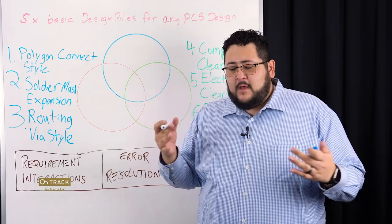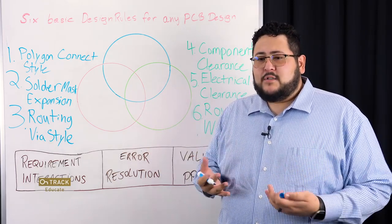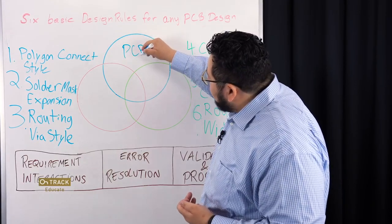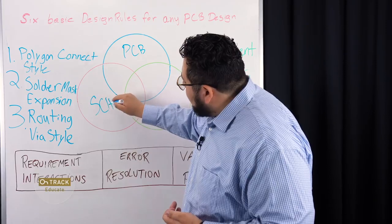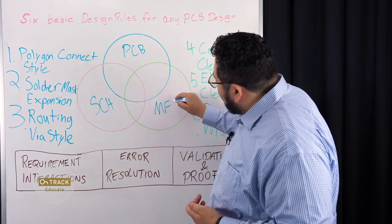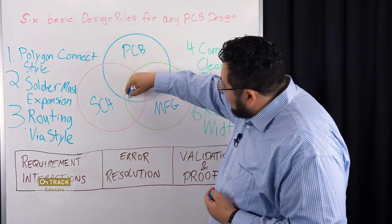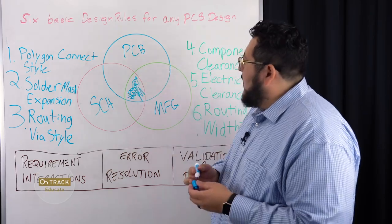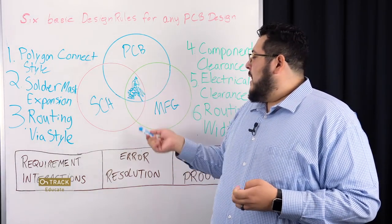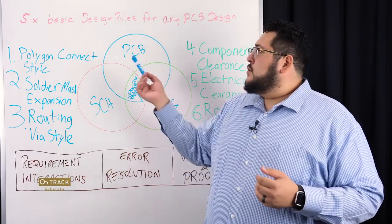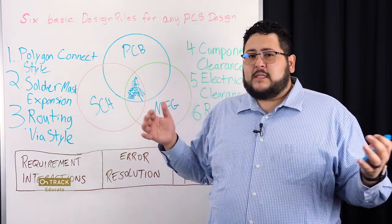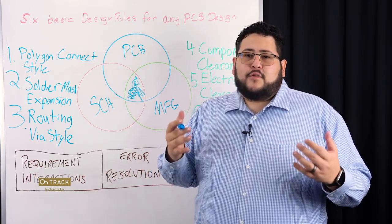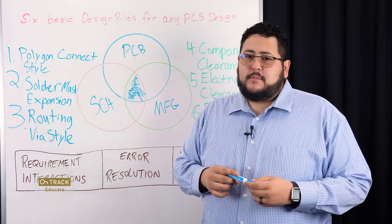Let's look at some of the ways design rules are brought into a system. You can get rules from the PCB side, from the schematic side, and from manufacturing. What's important is to try to get this area right here filled in and actually create rules that will help you cover all of these areas. We're going to talk about six rules that, if you incorporate them into all of your designs, you're off to a pretty good start and you'll be able to get something manufactured.